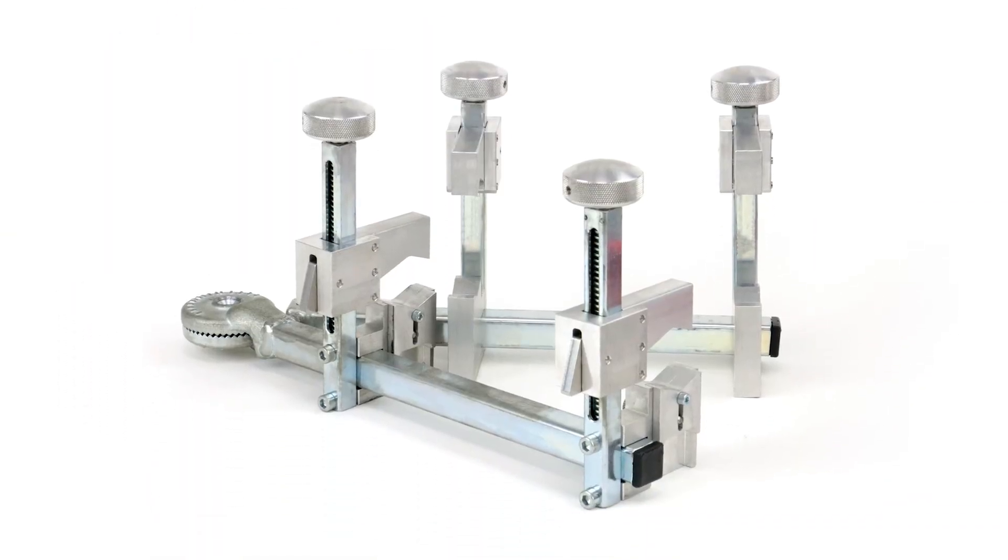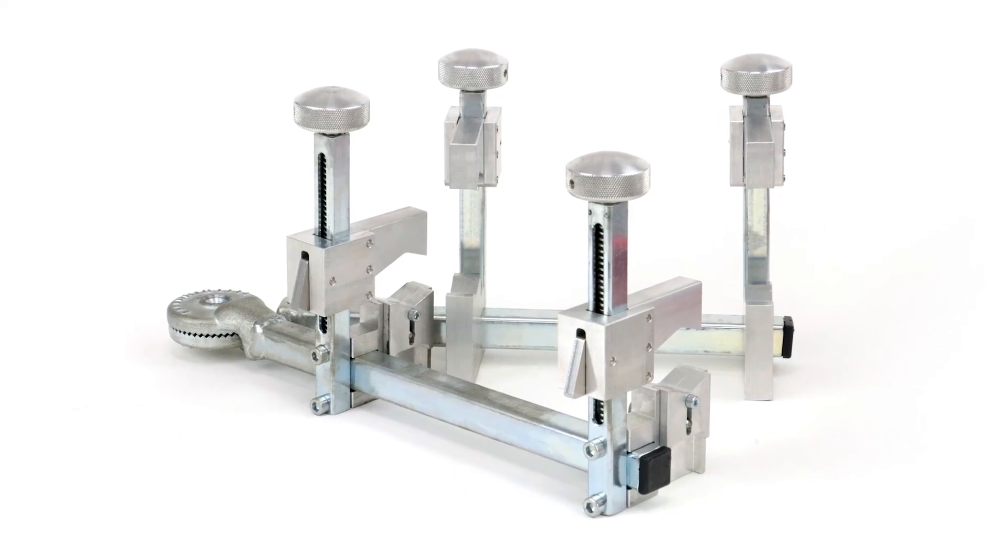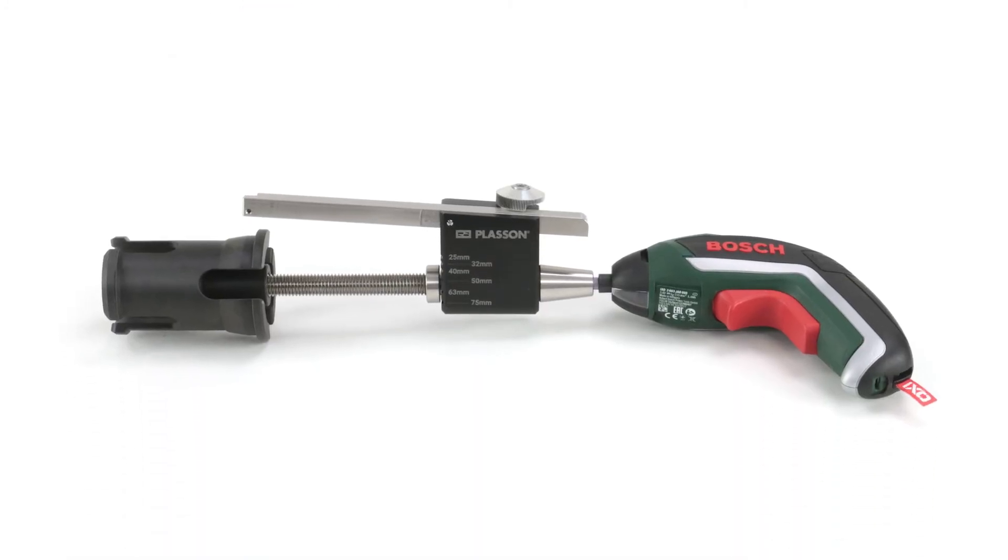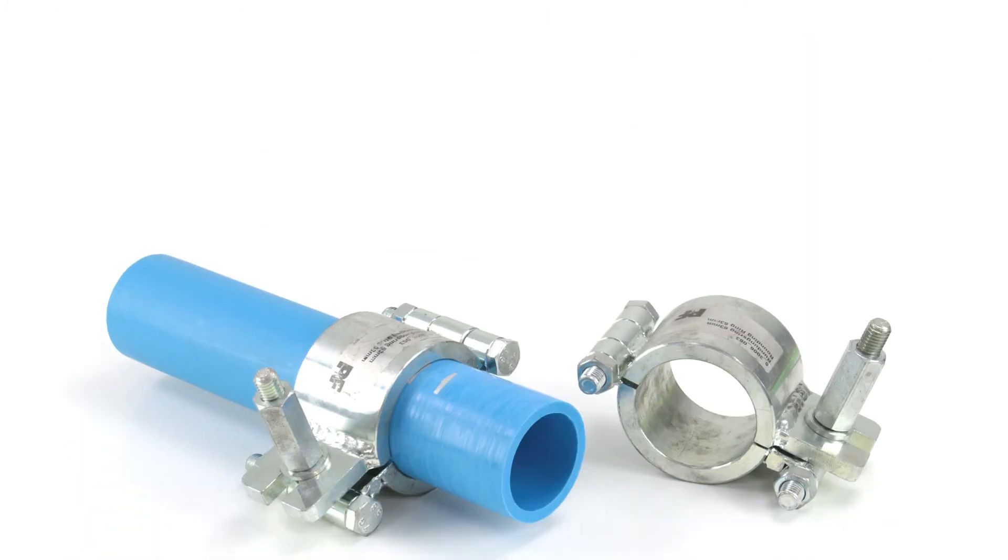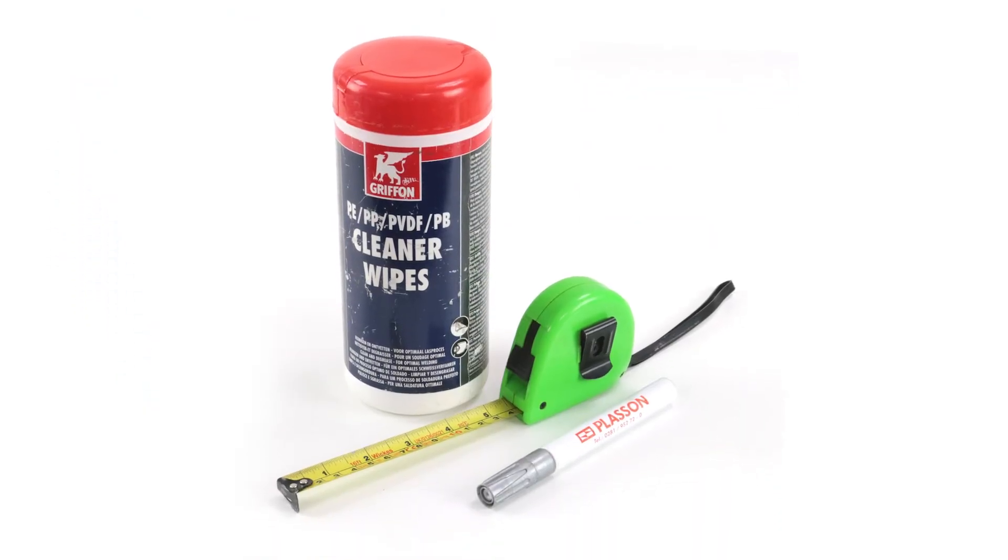Some pipe clamps—these are essential for keeping the joints still and secure during the welding process—a pipe scraper (you can get loads of different types of these, but today we're using a rotary scraper), some re-rounding tools, some degreasing wipes, a tape measure and a marker pen.